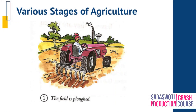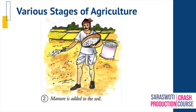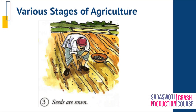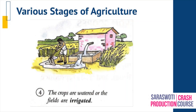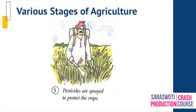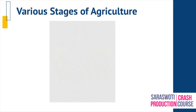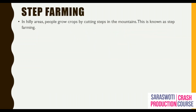The stages of agriculture are: number one, the field is ploughed; number two, manure is added to the soil; number three, seeds are sown; number four, the crops are watered, or the fields are irrigated; number five, pesticides are sprayed to protect the crops; number six, the crops are harvested.